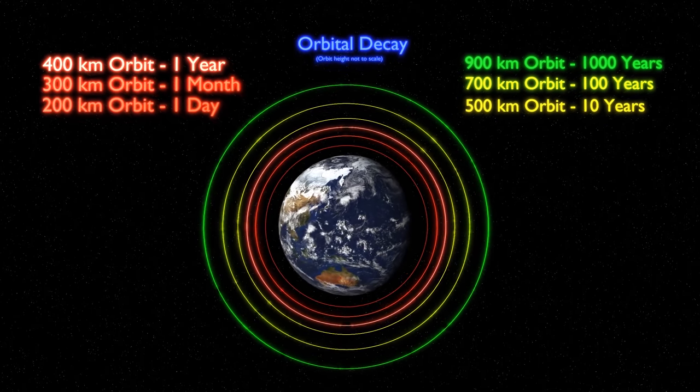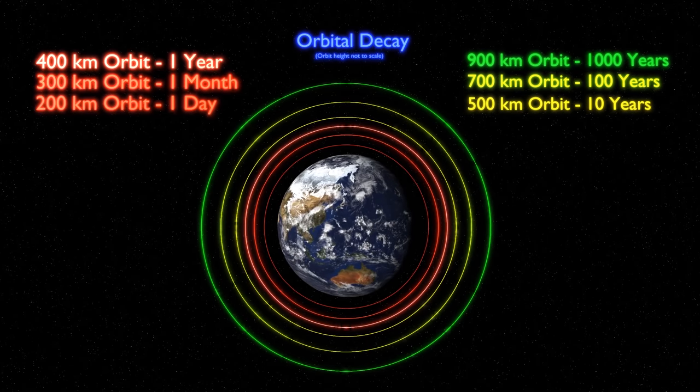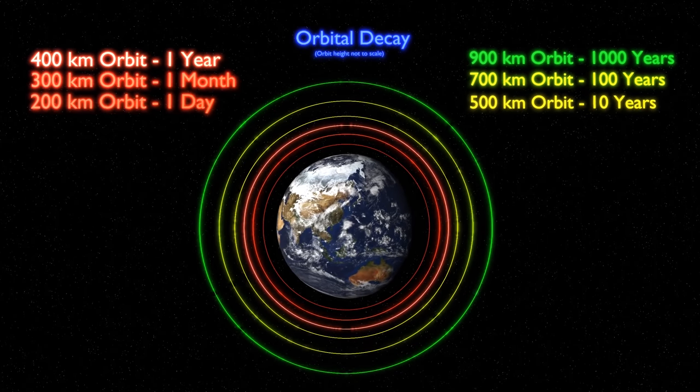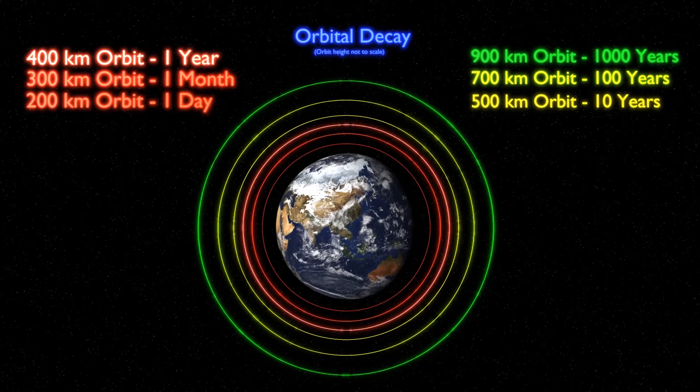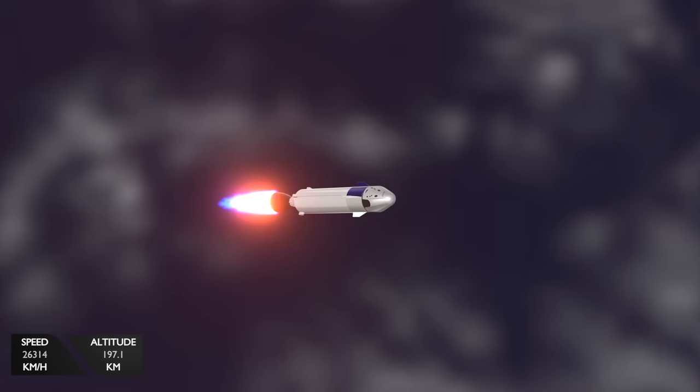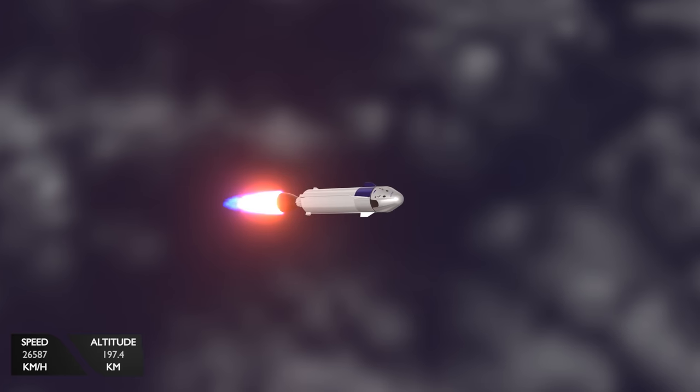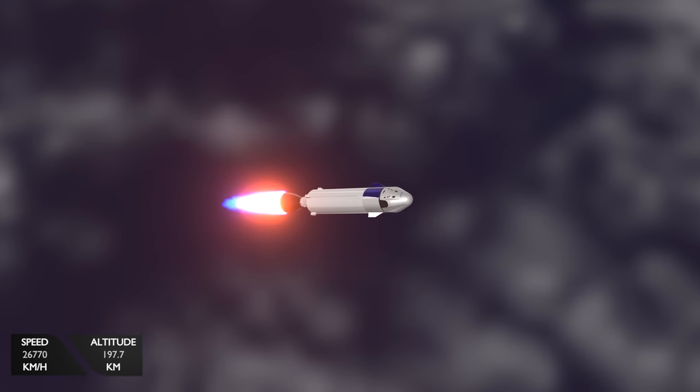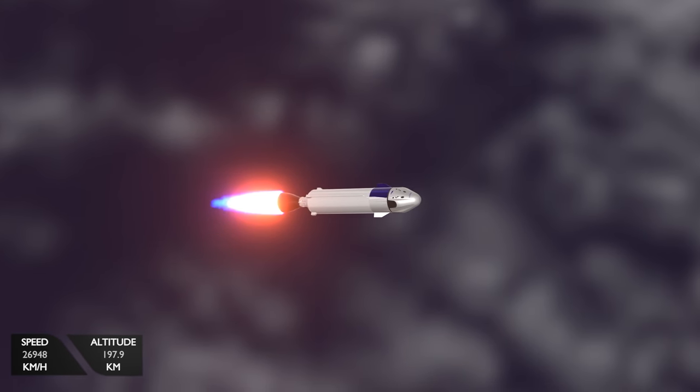Although there are several factors that contribute to orbital decay, which we will get into later, the height of an orbit dictates the rate of decay almost entirely. Let's look at an example of a Falcon 9 that is launching a Crew Dragon capsule to the ISS as an example of atmospheric drag and orbital decay.